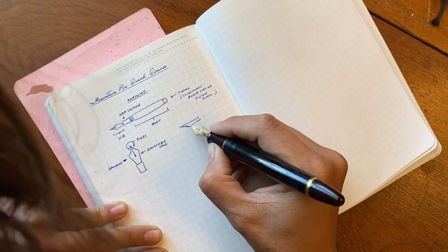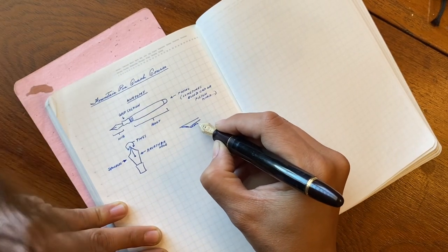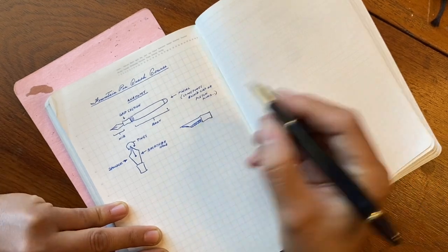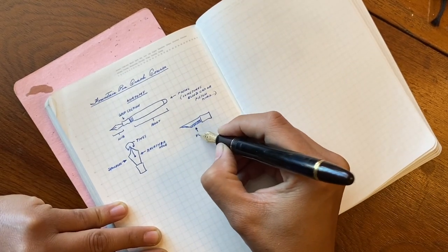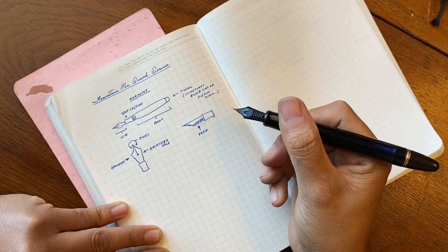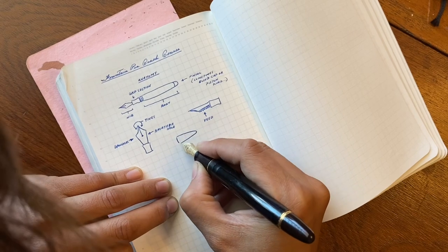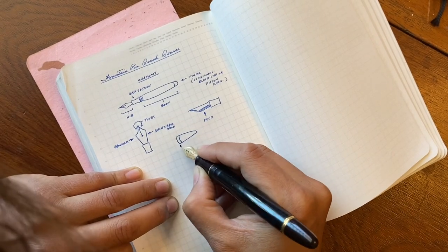The shoulders of the nib influence how flexible a nib can be. And then here, arguably one of the most important features of the fountain pen, is the feed. This is what regulates the ink flow and the air exchange.